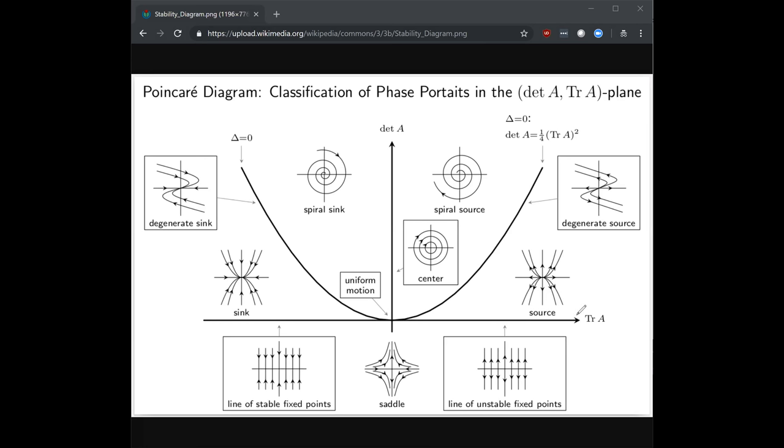So, for example, if the trace of A is zero and the determinant is positive, then we are in a situation where you have a center stable fixed point. What that means is that if you are not on the fixed point, but somewhere off, what you will do is you will rotate and oscillate around the fixed point as you evolve over time.